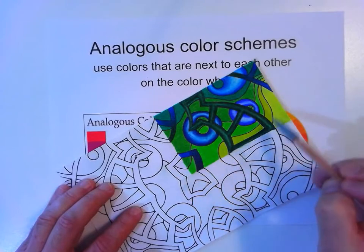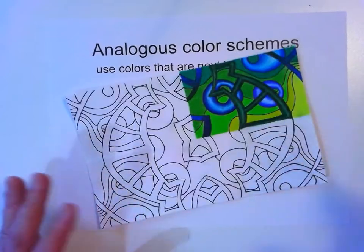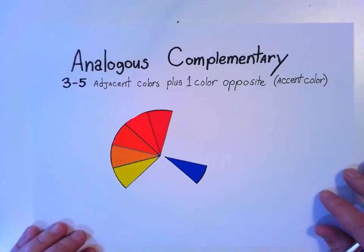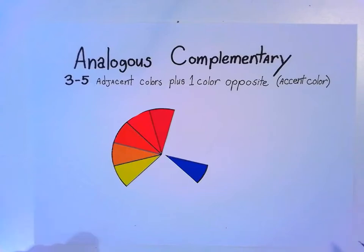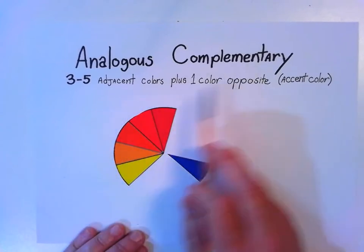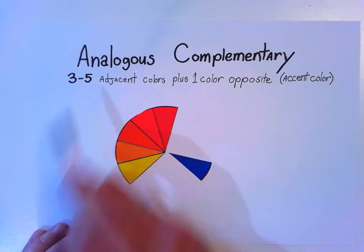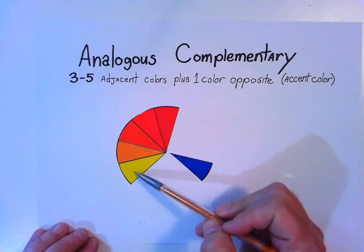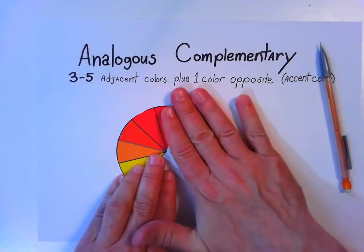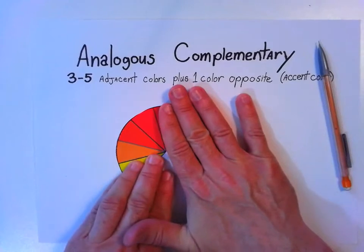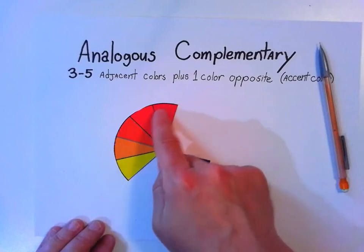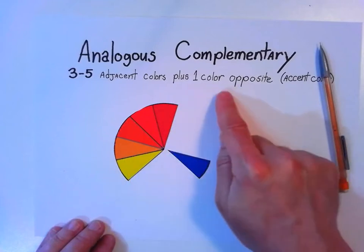The last one I want to talk about is analogous complementary — we are mixing the last two we just discussed. Analogous complementary is three to five adjacent colors, but if I just want to do an abstract design with yellow, orange, and red-orange, that would be three. So it's an analogous color scheme plus one color opposite, which is called an accent color.